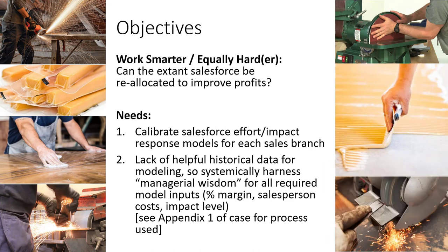The modeling inputs established through managerial wisdom include the percent margin, the salesperson cost, and the impact level expected for each additional unit of salesperson added at a branch, and so on. To see how this procedure of harnessing the wisdom of the managerial crowd was done, check appendix one of the case. It's an interesting exercise in how to reach group consensus amongst a series of different managers.